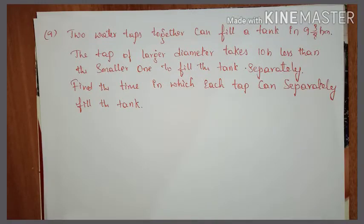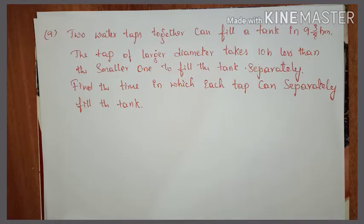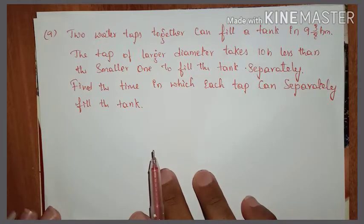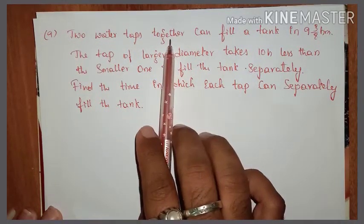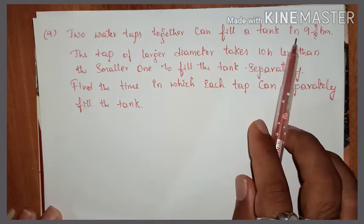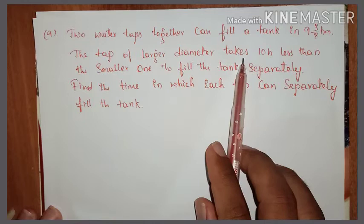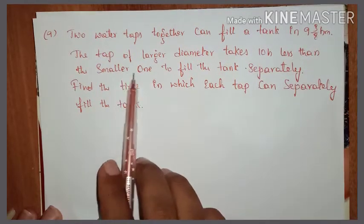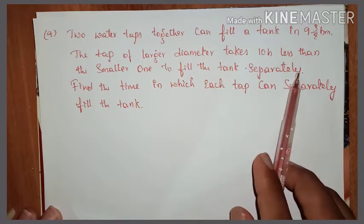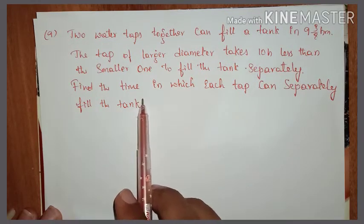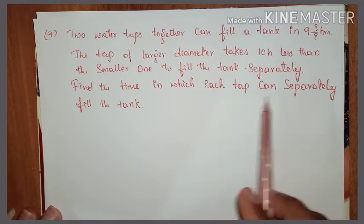Hello everyone, welcome to my channel. Today we are going to learn from the chapter quadratic equation, exercise 4.3, ninth question. The question: two water taps together can fill a tank in nine and three-eighths hours. The tap of larger diameter takes ten hours less than the smaller one to fill the tank separately. Find the time in which each tap can separately fill the tank.